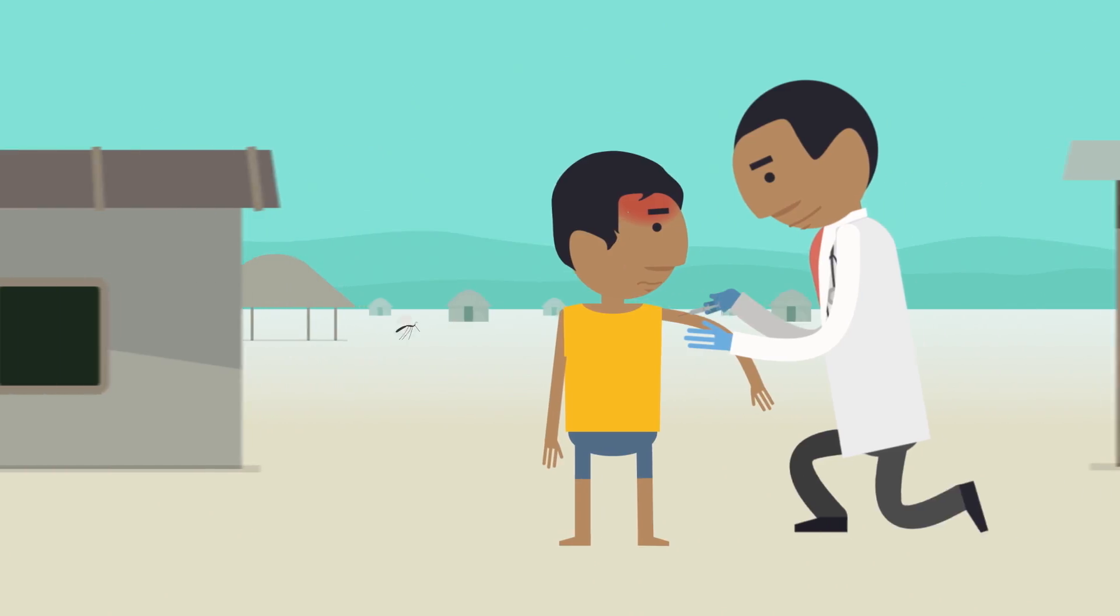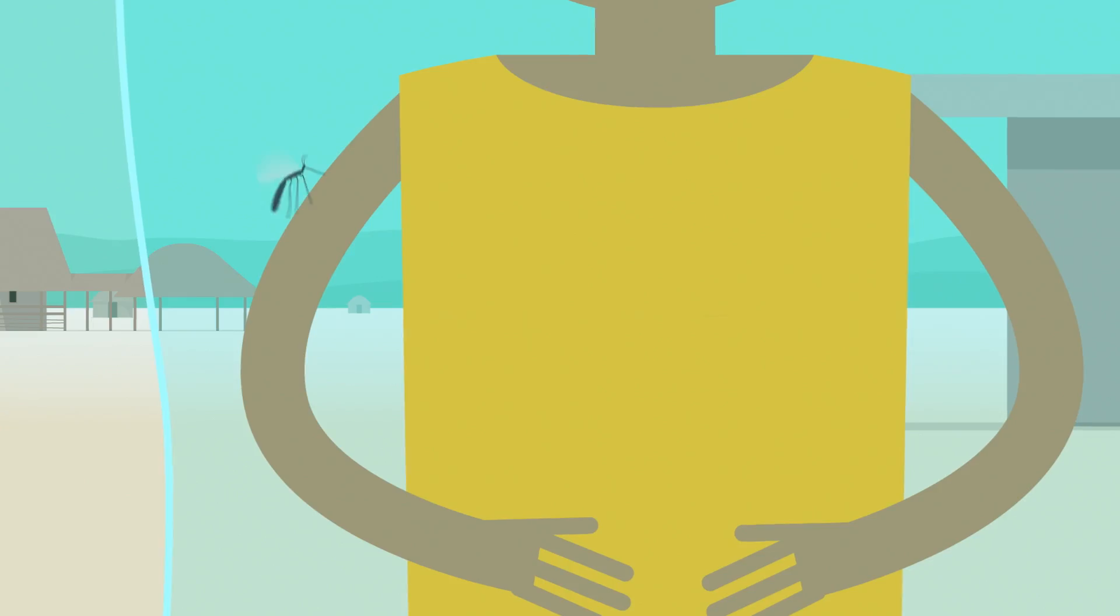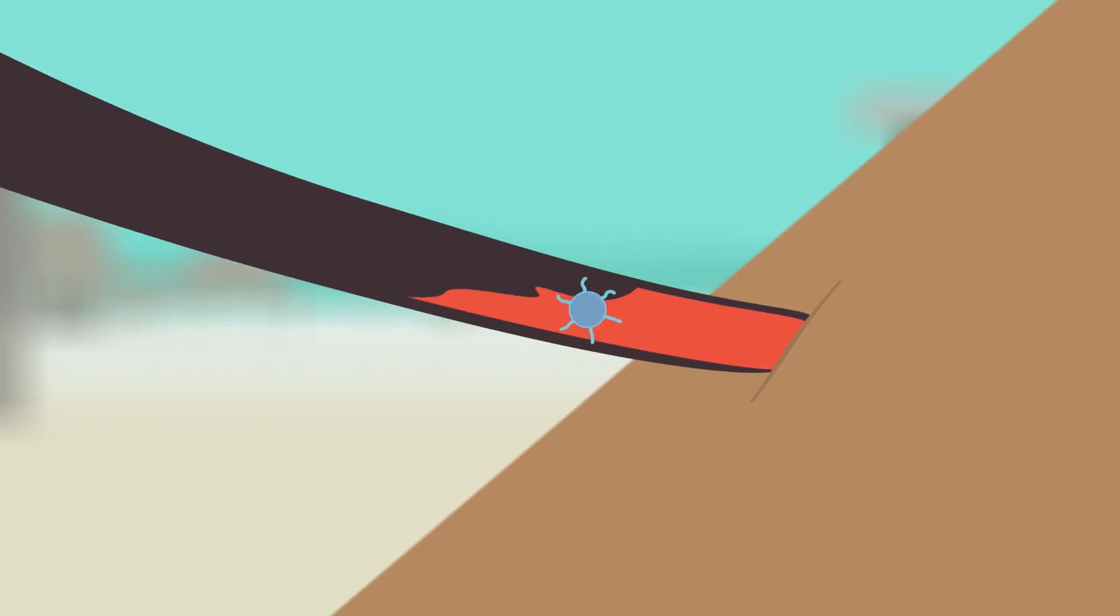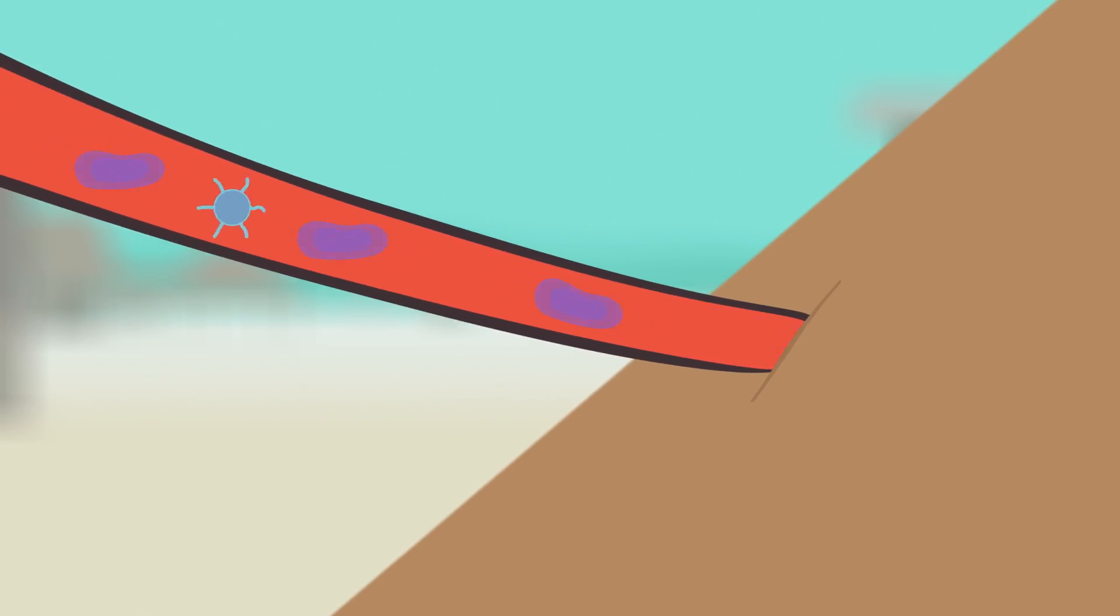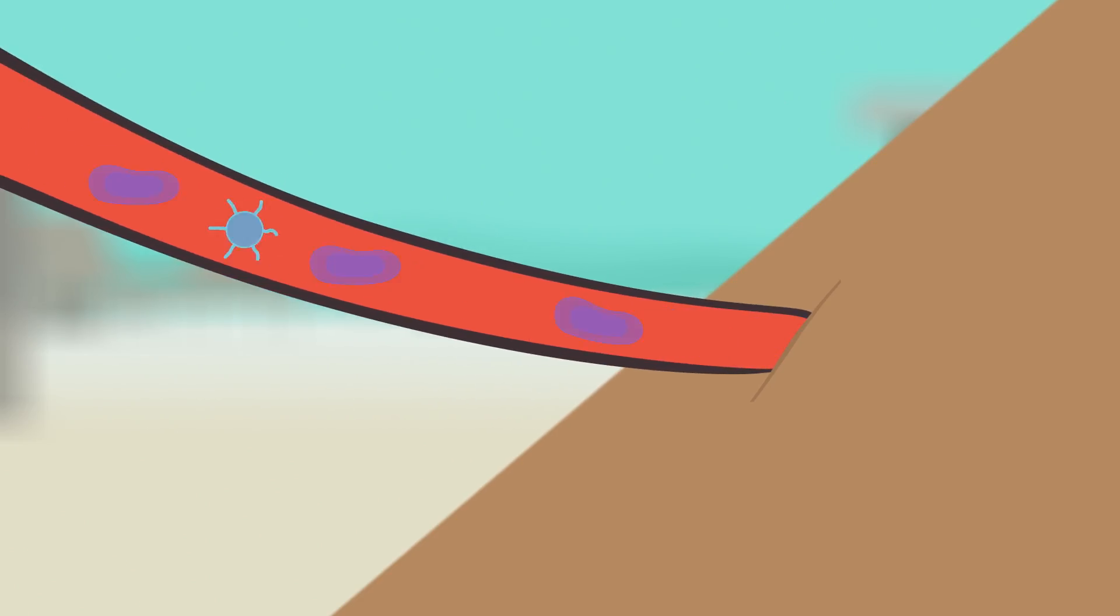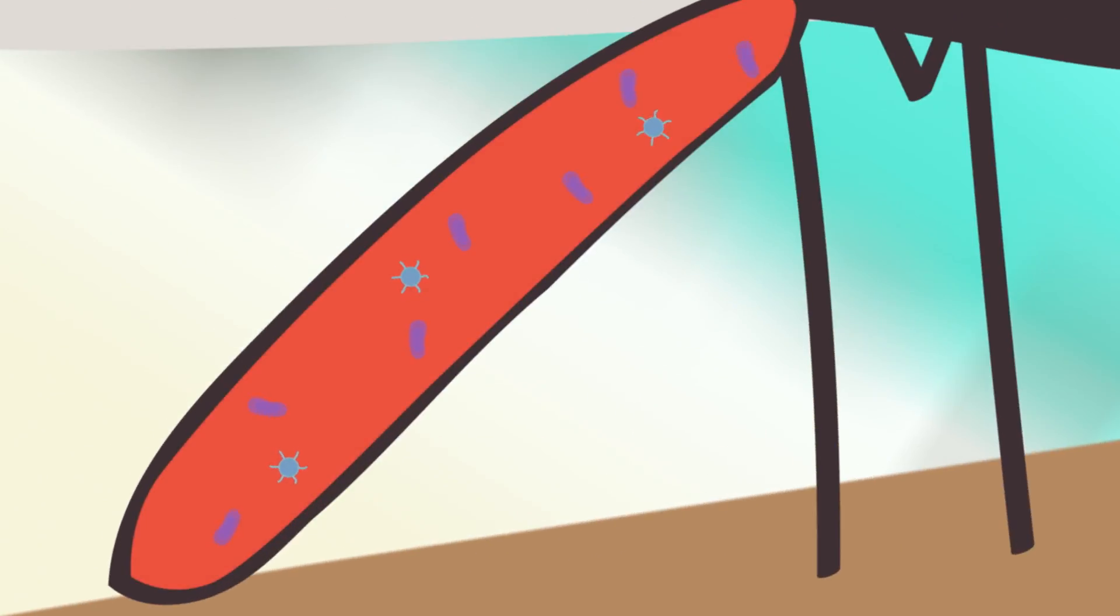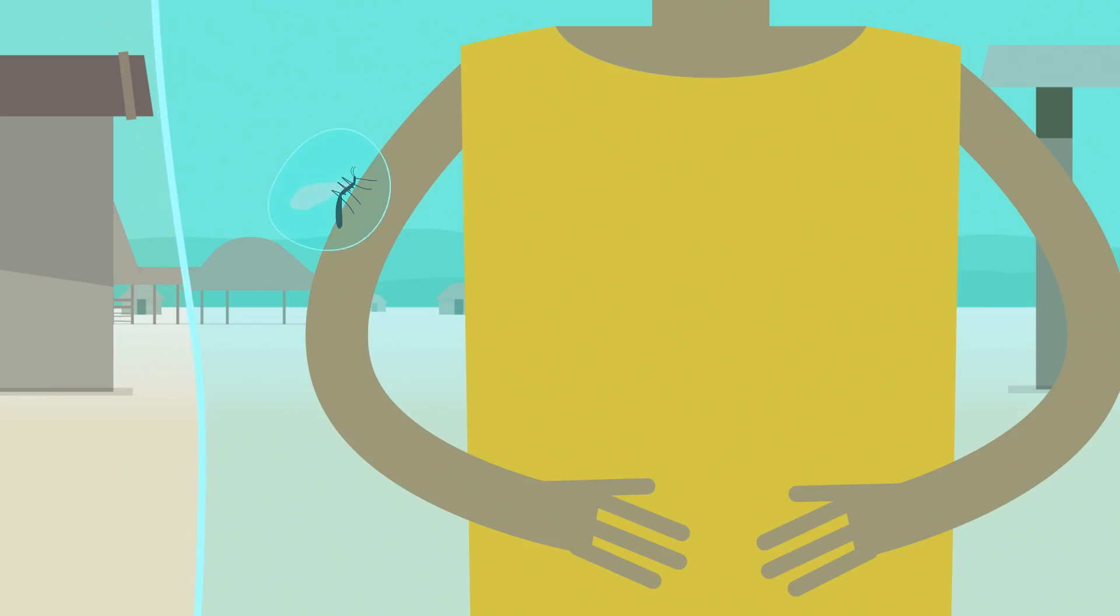A mosquito bites a person who has malaria. But this time, the person has been vaccinated. Now when the mosquito gets the malaria parasites, it also gets the antibodies generated by the vaccine. This interrupts the parasite's life cycle and prevents it from being transmitted to the next person.